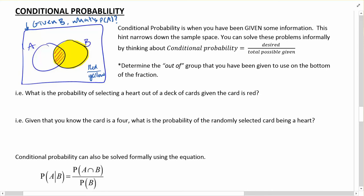Let's think about this. What is the probability of selecting a heart out of a deck of cards, given that the card is red? Given is our big keyword there. We know something - we know the card is red. That tells me that that's half the deck, right?